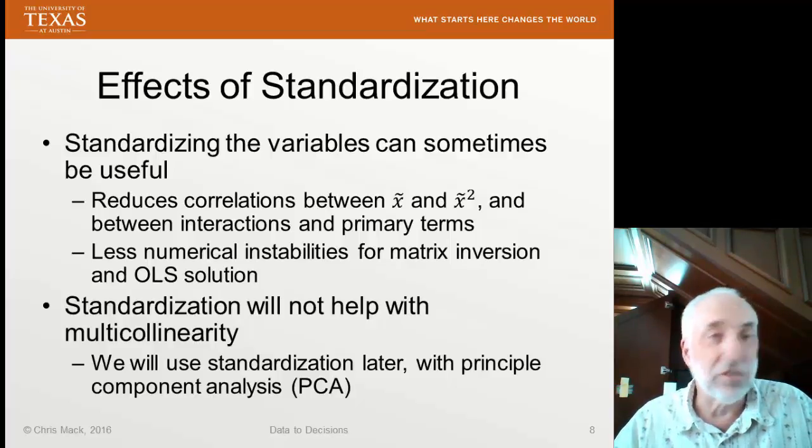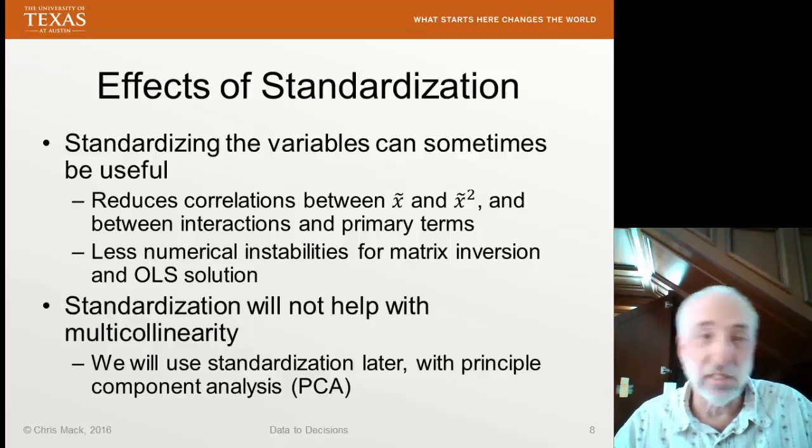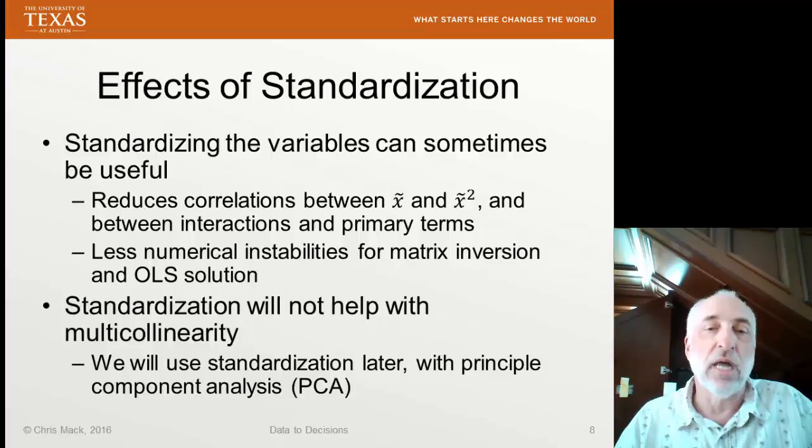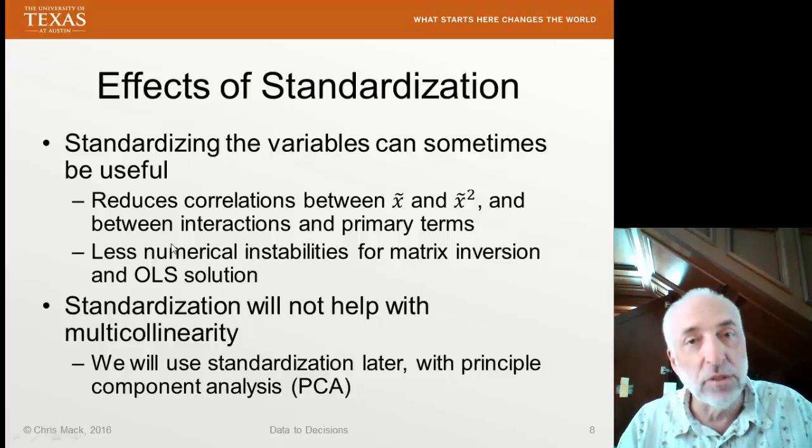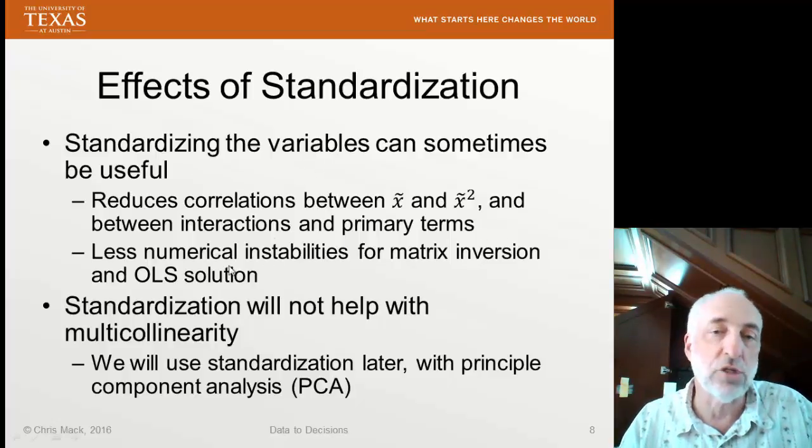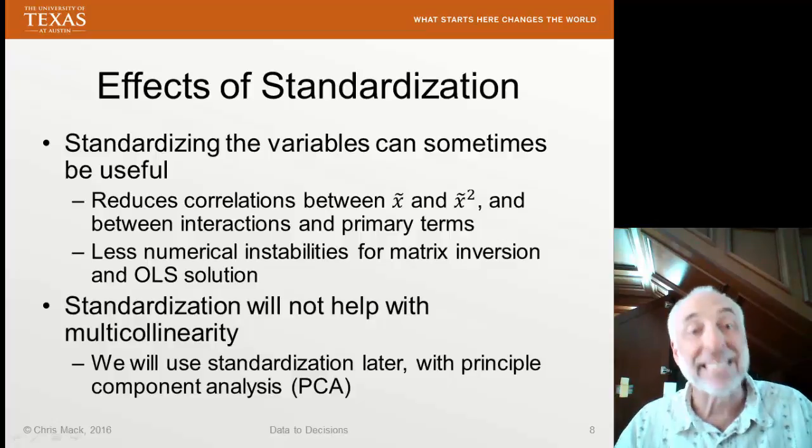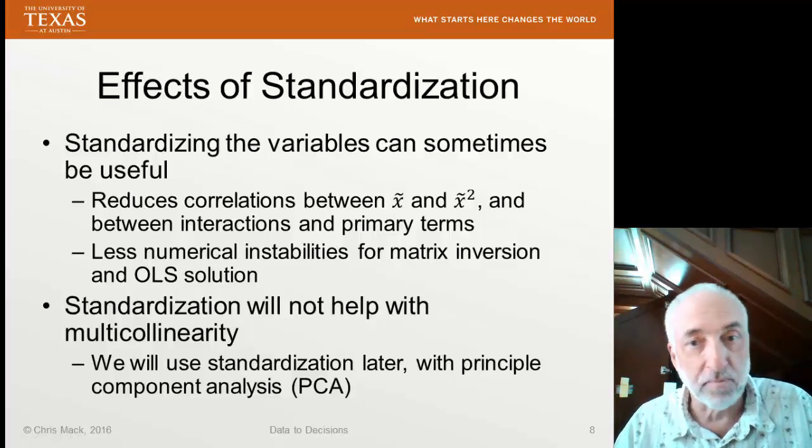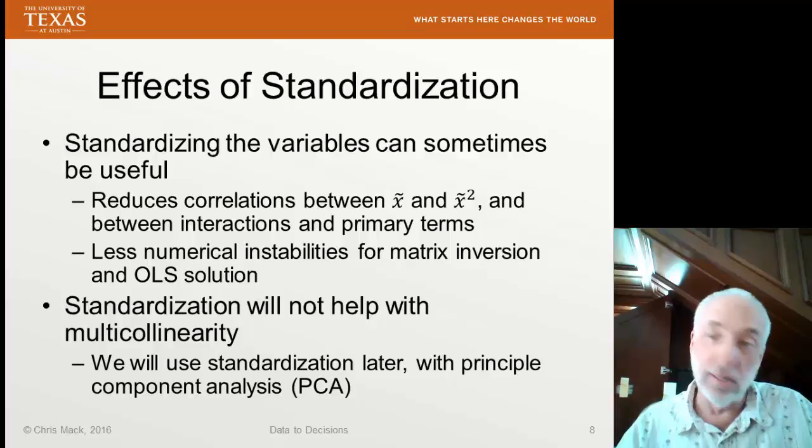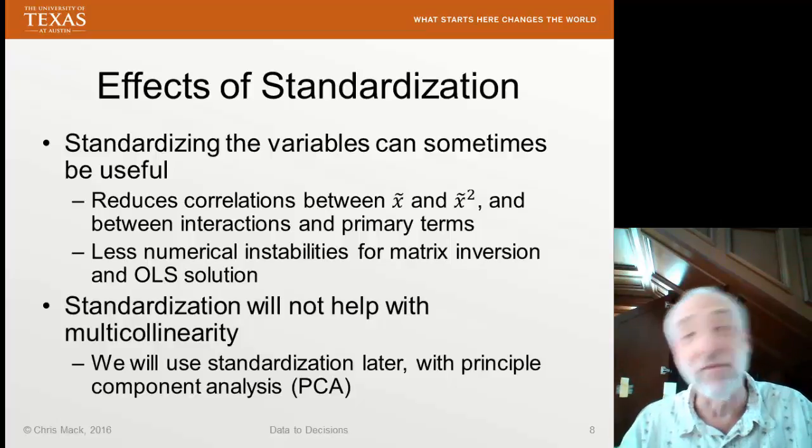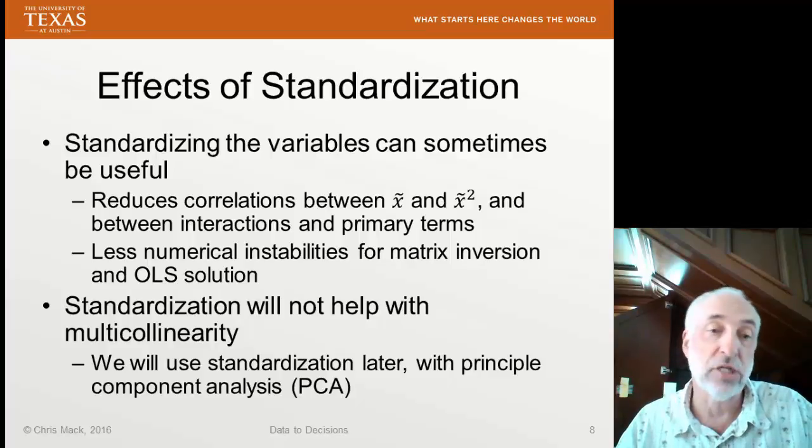With double-precision math that we generally use in all of our calculations, this is almost never a big problem. Nonetheless, I think a lot of software packages end up doing this kind of standardization just to be safe. It's not going to help with the problem of multicollinearity. If you have multicollinearity, subtracting off a constant and dividing by a constant for your variables doesn't change that.